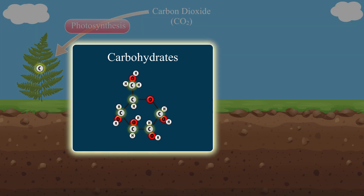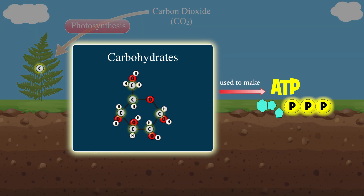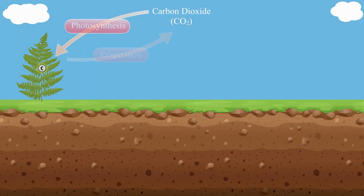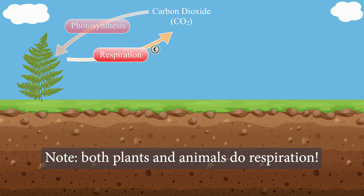These carbon compounds can be broken down by the plant to produce ATP, a key energy molecule used by living things, in a process called cell respiration. Respiration produces CO2 that is released back to the atmosphere. You may have noticed that we have already completed the cycle, since the carbon atoms have ended up back where they started.